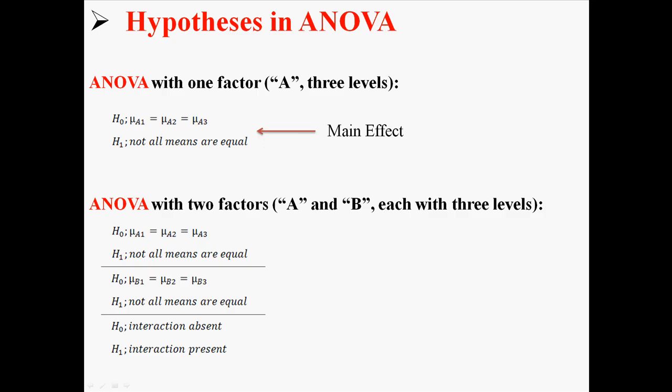And if you had three factors, you'd have even more things going on. So here you have the main effect of A and the main effect of B, and you can also test for the interaction of A and B, which would be structured just like that. The null being the interaction is absent, and the alternative being that the interaction is present.